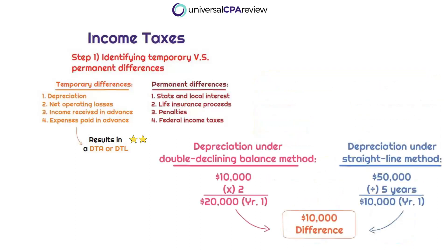For example, if we are applying the double declining balance method for depreciating a fixed asset on the tax return, but we are applying the straight-line method on the income statement, then we're going to take more depreciation in earlier years when applying that declining balance method on the tax return. That will result in a temporary difference. At some point, the total depreciation expense will be the same amount and therefore the difference will eventually become no more, but there are going to be differences throughout the actual depreciation of the asset.